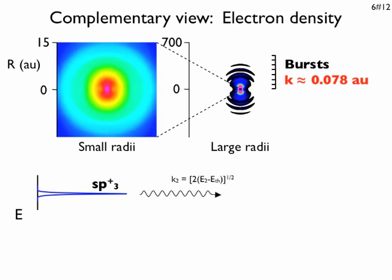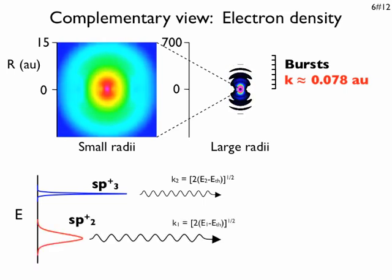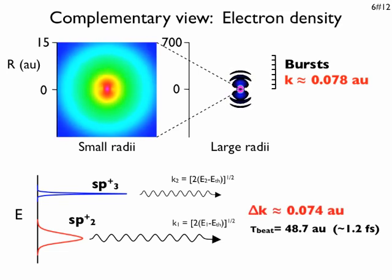Now, if only one doubly excited state were populated, we would expect a continuous electron emission. However, since two resonances are populated, the two emissions interfere, and this is precisely what we observe.